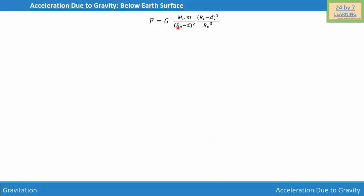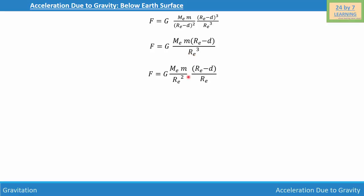Simplifying, F = G·m_e·m·(r_e minus d)^3 / [(r_e minus d)^2 · r_e^3]. Cancelling two powers of (r_e minus d), we get F = G·m_e·m·(r_e minus d) / r_e^3. Separating r_e^3 as r_e^2 · r_e, we rewrite this as F = [G·m_e·m / r_e^2] · [(r_e minus d) / r_e].